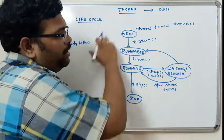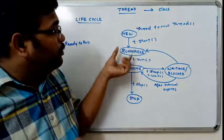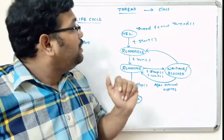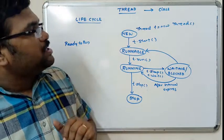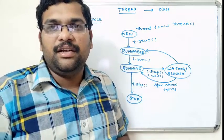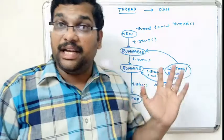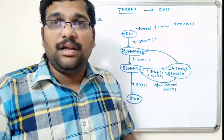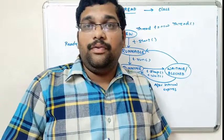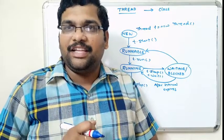A thread is available in five different states, and based on which method is called it moves from one state to another. This is the simple concept of the thread life cycle — just an introduction. In further sessions we will go in depth on implementing threads. Don't forget to subscribe to our channel and keep following. Thanks for listening, thank you very much.